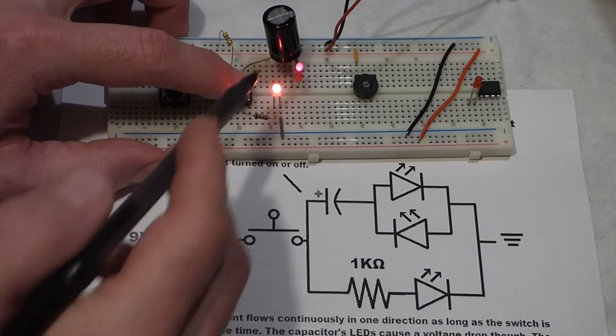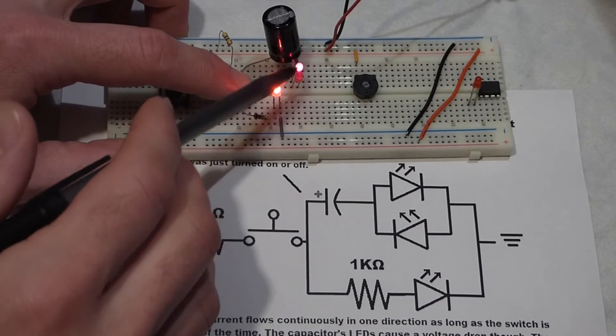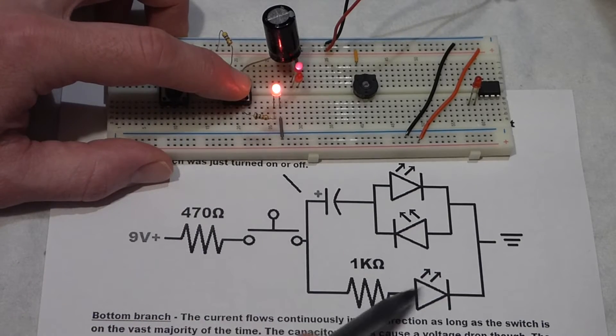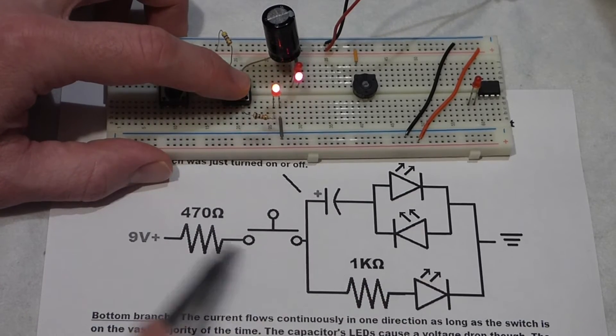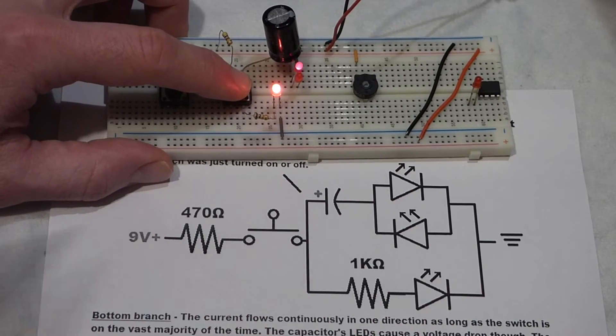But still, this LED stays on even though the brightness is changing. That's mostly due to the voltage drop of these two LEDs. But current continues going through here as long as the switch is on most of the time.